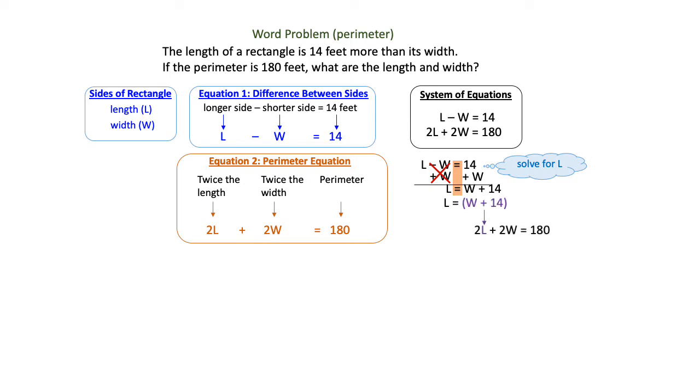The next thing I'm going to do is substitute that into the perimeter equation. That will give me 2 times parentheses W plus 14, plus 2W equals 180.